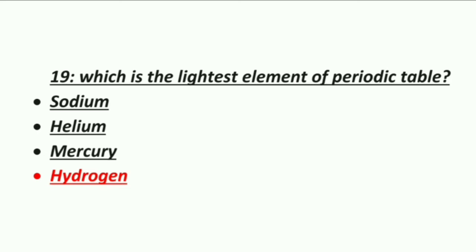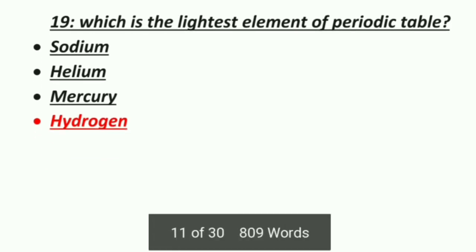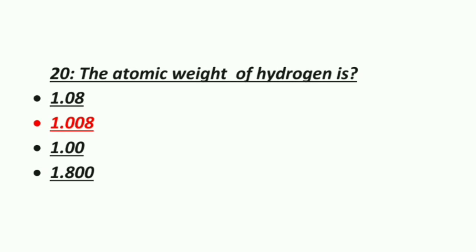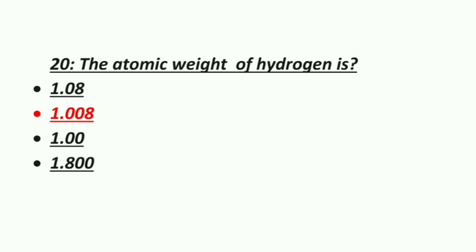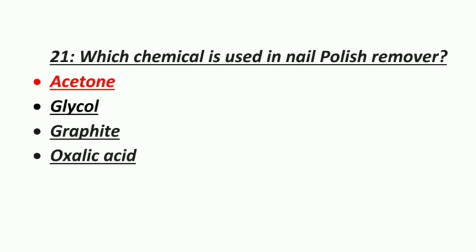Nineteenth MCQ: which is the lightest element of the periodic table? Option 1: Sodium, Option 2: Helium, Option 3: Mercury, Option 4: Hydrogen. The correct answer is hydrogen. Twentieth MCQ: the atomic weight of hydrogen is — Option 1: 1.08, Option 2: 1.008, Option 3: 1.00, Option 4: 1.800. The correct answer is 1.008.